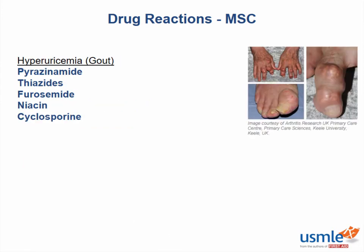Pyrazinamide, thiazides, furosemide, niacin, and cyclosporine all decrease the ability of the kidney to place uric acid into the urine. Therefore, they increase the amount of uric acid in the serum and the risk of gout.